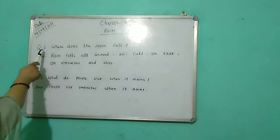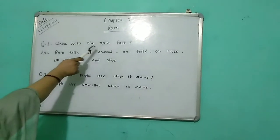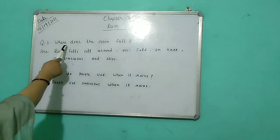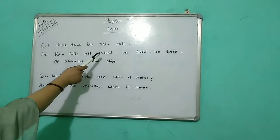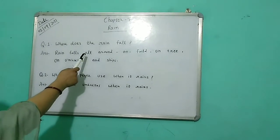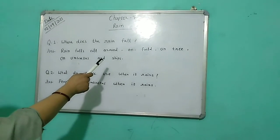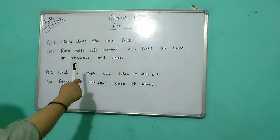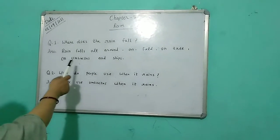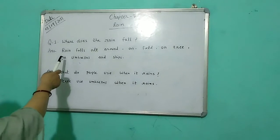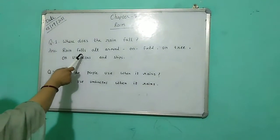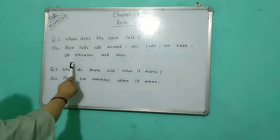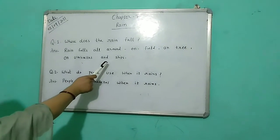Question number one. Where does the rain fall? The answer is: rain falls all around, on fields, on trees, on verandas, and ships.